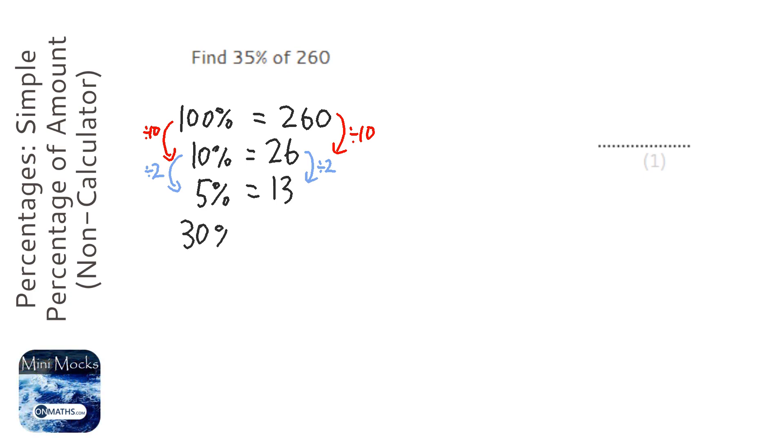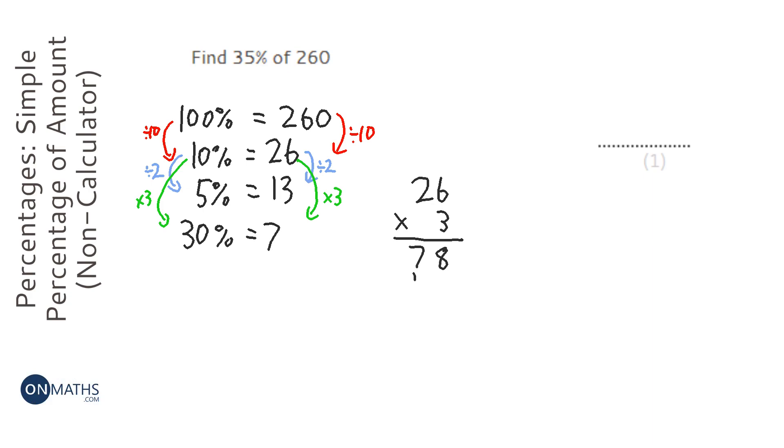So I'm going to get that 10% and times that by 3. I can just do it over here. I want 26 times by 3, so 3 times 6 is 18, 3 times 2 is 6, plus the 1 is 7, so that's going to be 78.